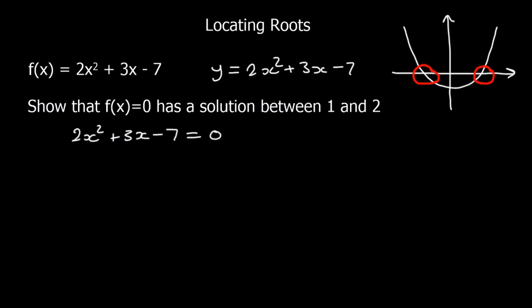So if a function is negative here and positive here, it must have crossed through the x-axis, as long as it's a continuous function. So we're going to put in two different inputs, 1 and 2. And if there's a change of sign, then that means that we've found the root.